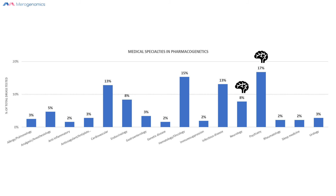The largest number of medications known to be linked to genetic factors are those involved in neurology and psychiatry. This is significant because these types of patients are also the most likely to go through trial and error, requiring switching from one type of medication to another.